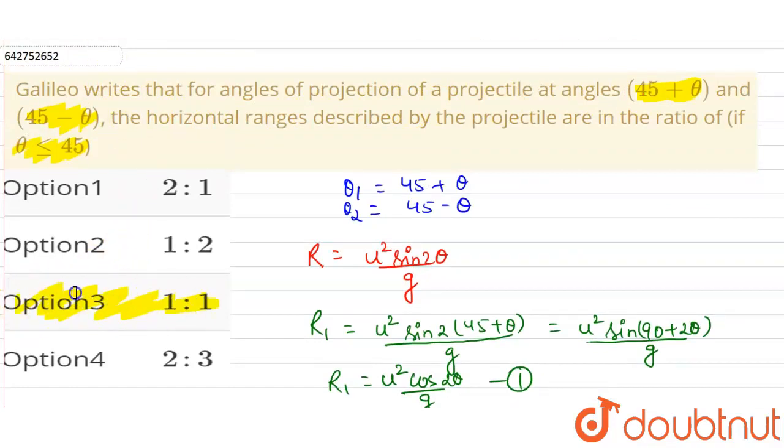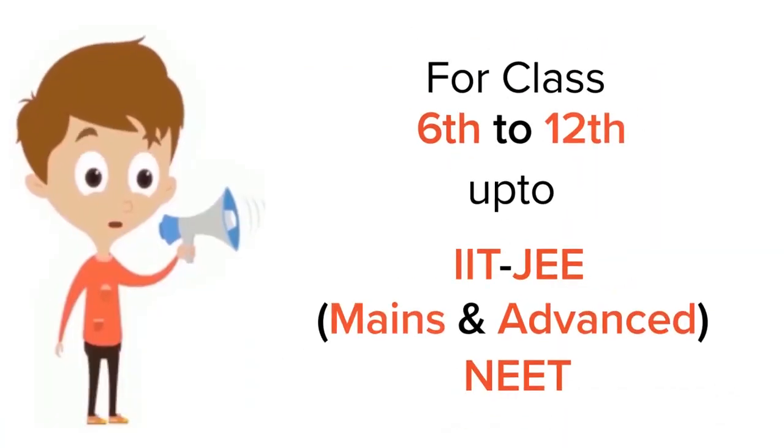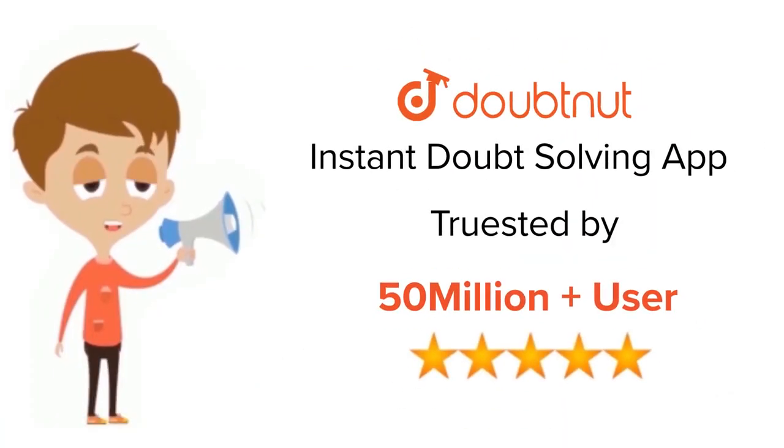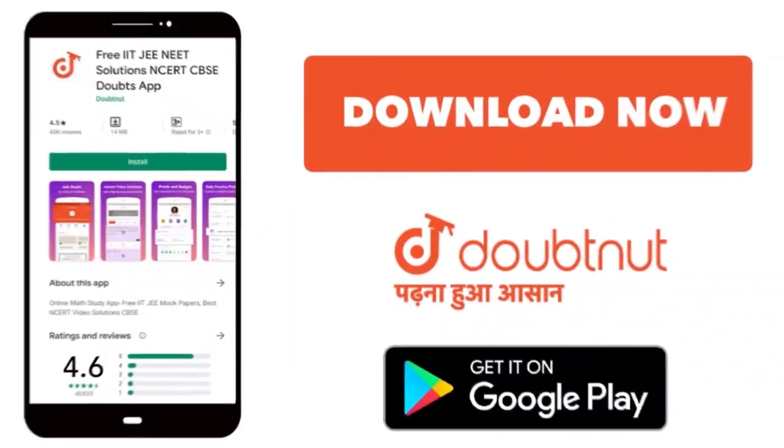So from the options, option number 3, that is 1:1, is the correct option for us. Thank you. For class 6 to 12, IIT-JEE and NEET level, trusted by more than 5 crore students, download Doubtnet app today.